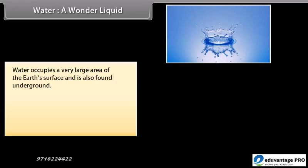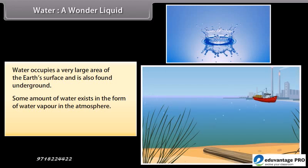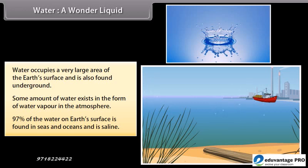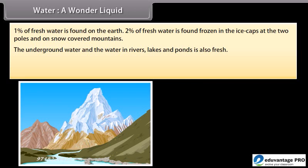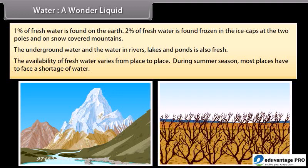Water occupies a very large area of the Earth's surface and is also found underground. Some amount of water exists as water vapor in the atmosphere. 97% of the water on Earth's surface is found in seas and oceans and is saline. Only 1% of fresh water is found on the Earth, while 2% of fresh water is found frozen in ice caps at the two poles and on snow-covered mountains. The availability of fresh water varies from place to place, and during summer, most places face a shortage of water.